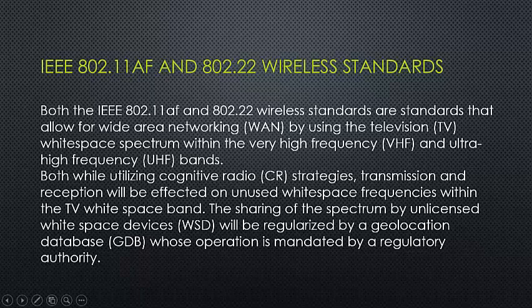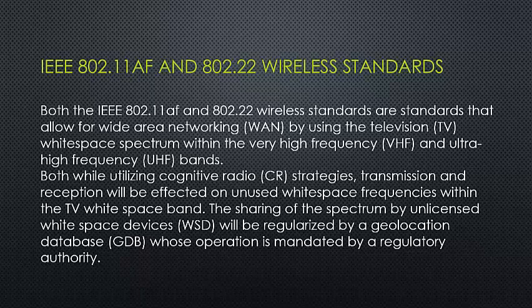The IEEE 802.11af and the 802.22 wireless standards both allow for wide area networking of devices — machine to machine — by using the television white space spectrum, that's the VHF and UHF bands. While utilizing cognitive radio strategies for transmission and reception, they both use unused white space frequencies in the TV white space band, sharing the spectrum by using a geolocation database whose operation is mandated by a regulatory authority.